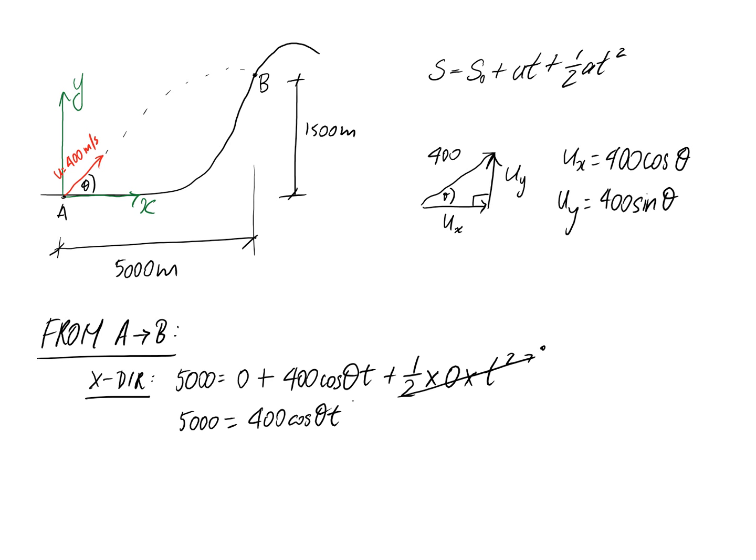In order to prepare for the next step, I'm going to rearrange this to be T equals 5000 divided by 400 cos theta, which is the same as 12.5 divided by cos theta. That's equation one.